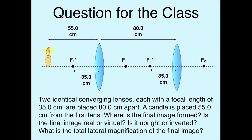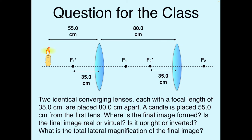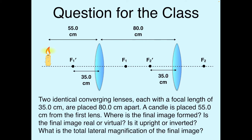I thought we'd try this one out. It involves a double lens system. We have two identical converging lenses, each with a focal length of 35.0 centimeters, placed 80 centimeters apart. A candle is placed 55.0 centimeters away from the first lens. The questions are: where is the final image formed? Is it real or virtual? Is it upright or inverted? And what is the total lateral magnification? Pause the video and try it out.